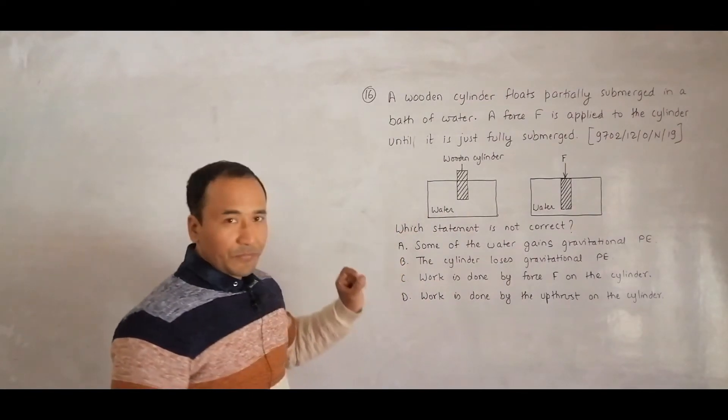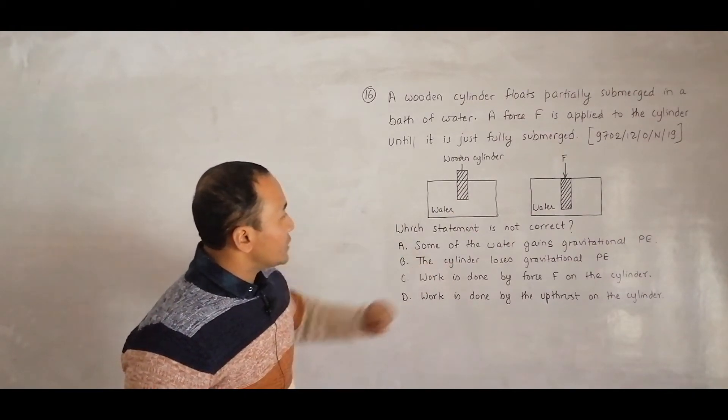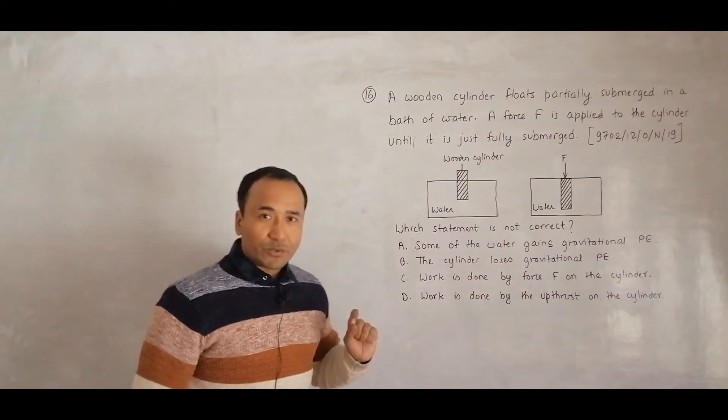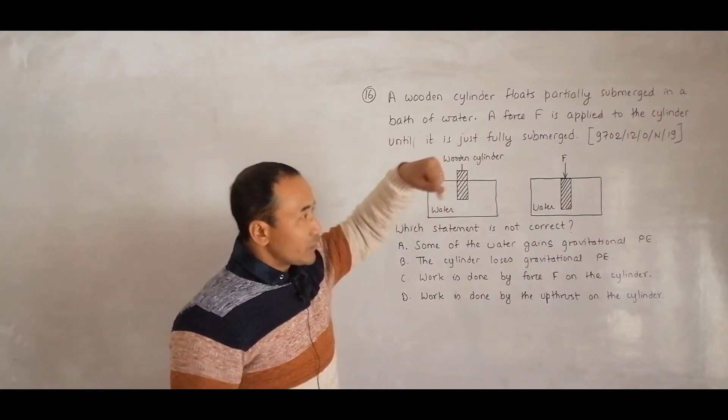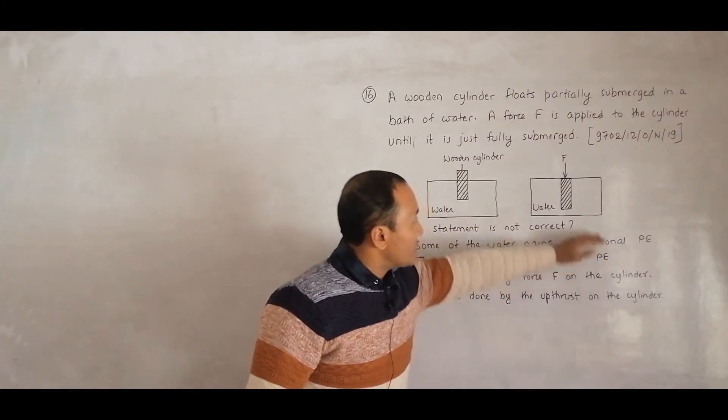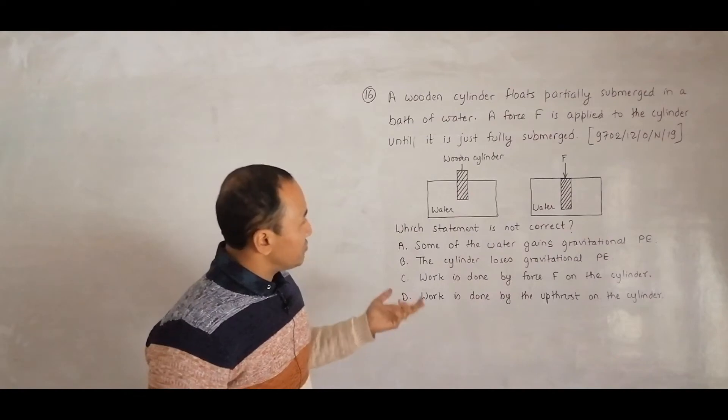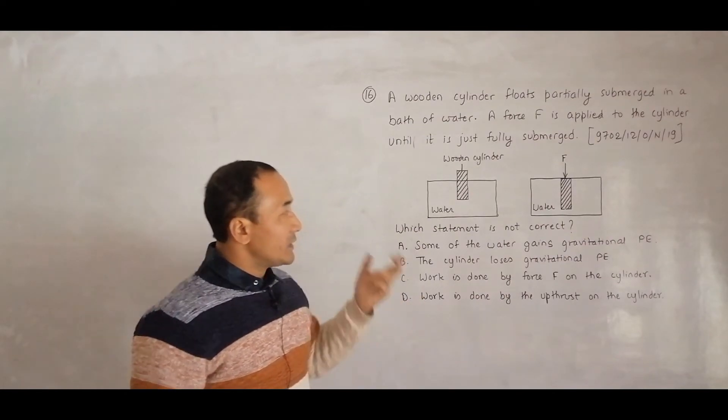Option B: The cylinder loses gravitational potential energy. This is true because by applying that force we decreased its height. If I consider this as the ground, the MGH part - the H part has decreased, so this is a correct statement.